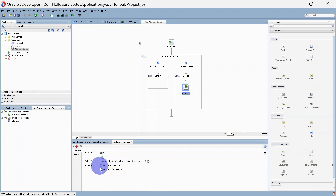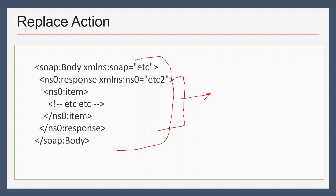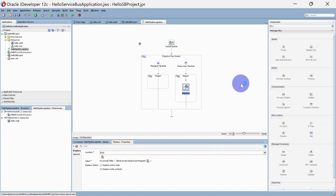Here you can see two options: Replace Entire Node and Replace Node Content. We are going to select Replace Node Content. Let's understand what these two options do. If this is our SOAP body and we select Entire Node, we'll have to replace the entire SOAP body from top to bottom. But in our case we just want to replace a node inside our SOAP body, so we are selecting Replace Node Content. If you select Entire Body, in the replace expression you will have to mention the entire SOAP body, otherwise it will give an error. We will save this pipeline.